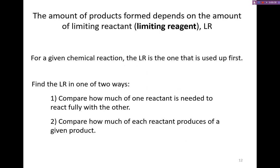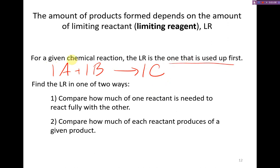The amount of products formed depends on the amount of limiting reactant or limiting reagent that we have. For a given chemical reaction, the limiting reactant is the one that's used up first. So let's just say that we've got A plus B react to yield C. In this reaction, let's say that there's a 1 to 1 to 1 ratio. We can find and identify the limiting reactant in a couple of different ways.